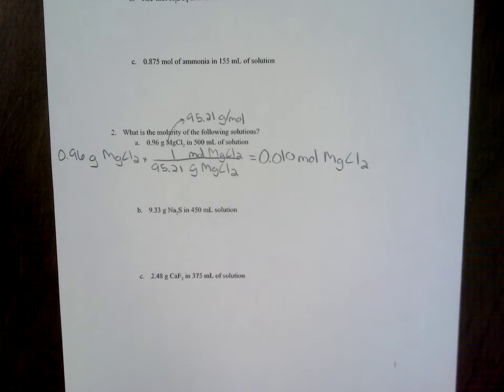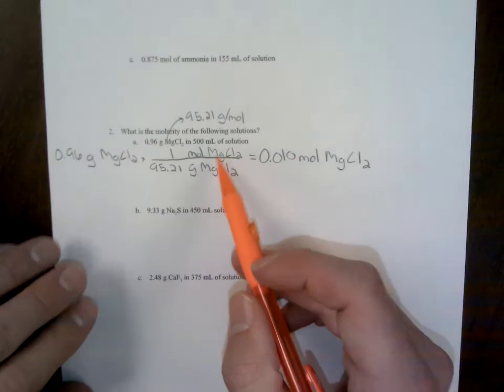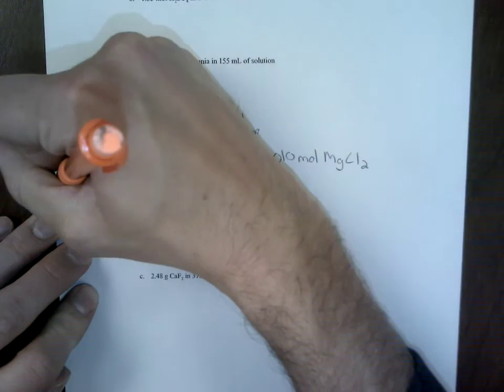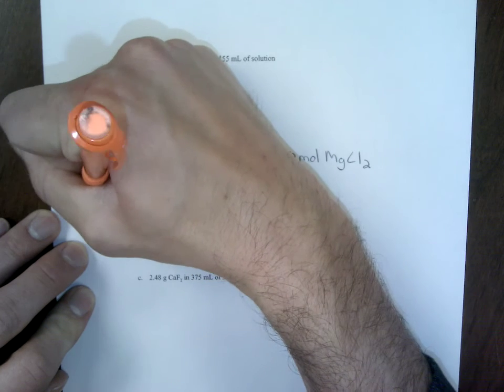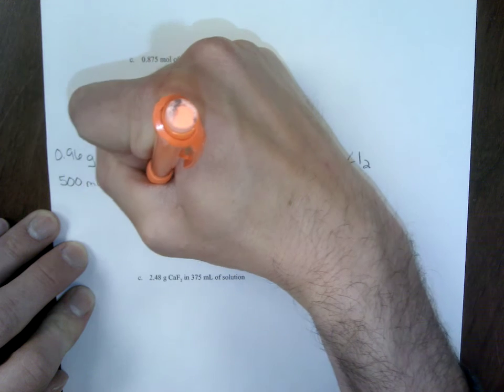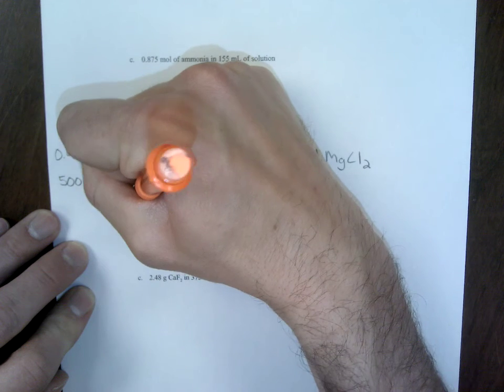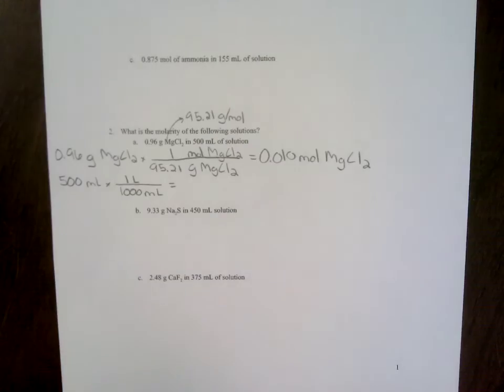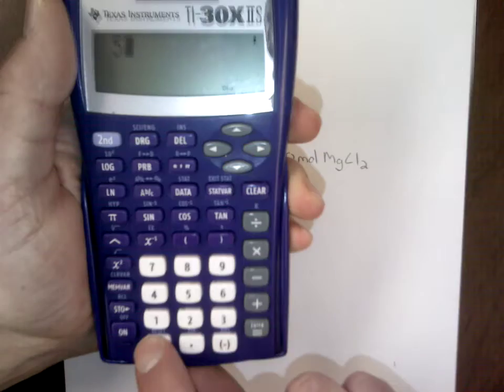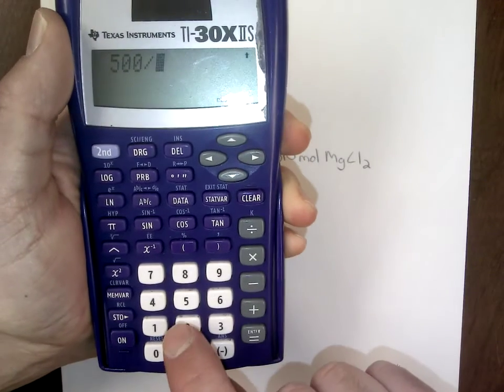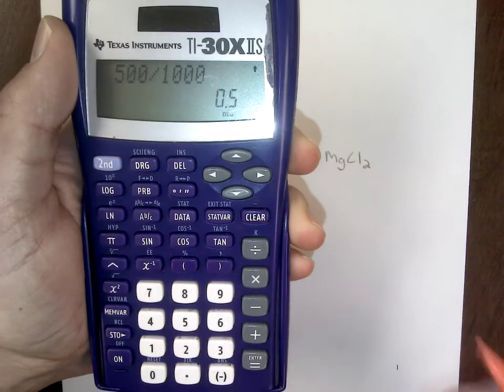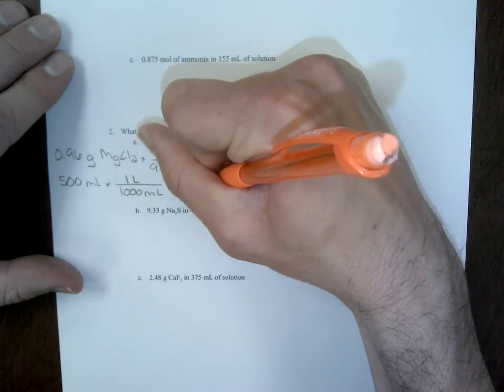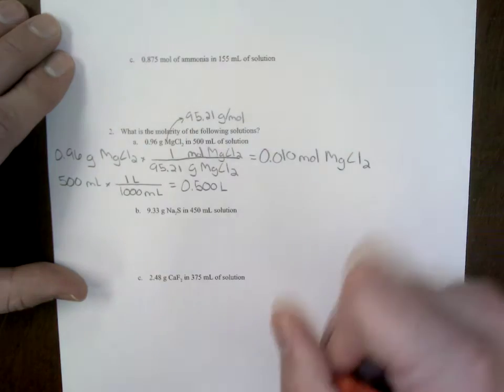And our value for our moles, we're going to round to two significant digits, would be 0.010 moles. So 0.010 moles of MgCl2. The next thing that we need is liters of solution. Unfortunately, we're given milliliters of solution, so we need to convert this over. We need liters, so we're going to take 500 milliliters and convert it. There is 1,000 milliliters for every one liter. To find out how many liters we have of this particular solution, we take 500 divided by 1,000.